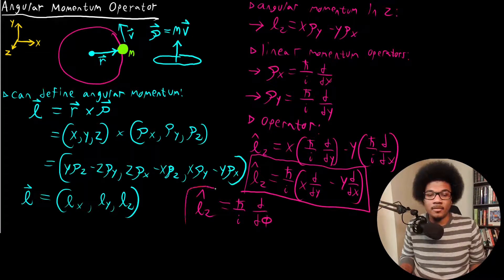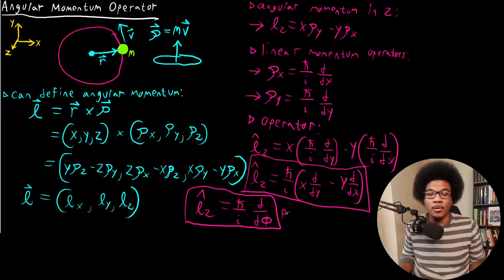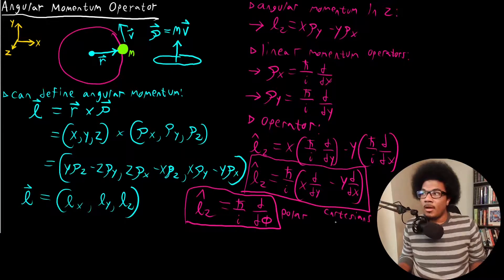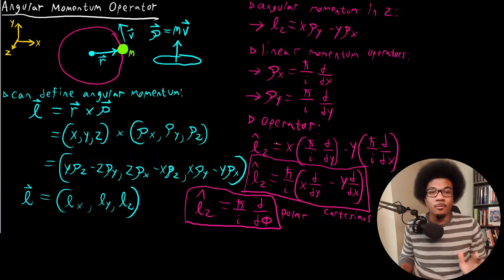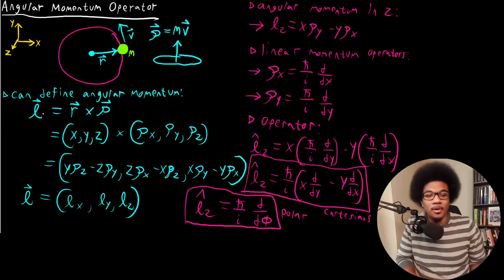So this will be the angular momentum operator in the Z direction in polar coordinates, and up here this is in Cartesian coordinates. So we have our angular momentum operator — this is the definition of the angular momentum operator.